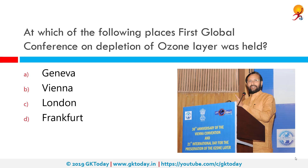At which of the following places was the first global conference on depletion of the ozone layer held? It was held in Vienna. The Vienna Convention for the Protection of the Ozone Layer is a multilateral environmental agreement signed in 1985 that provided frameworks for international reduction in the production of chlorofluorocarbons due to their contribution to the destruction of the ozone layer and the resulting increase in the threat of skin cancer.